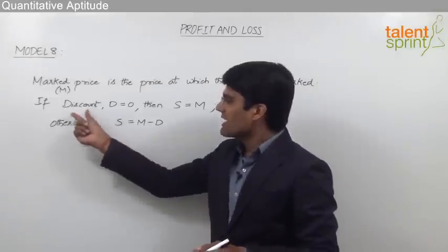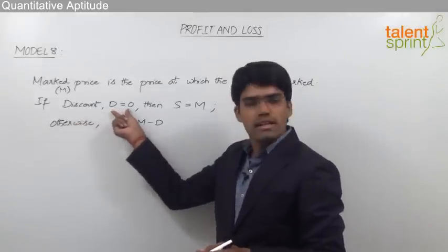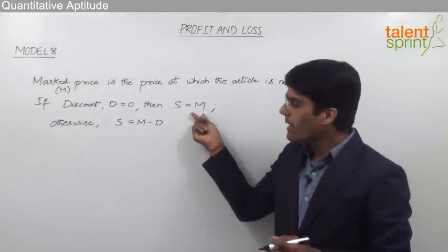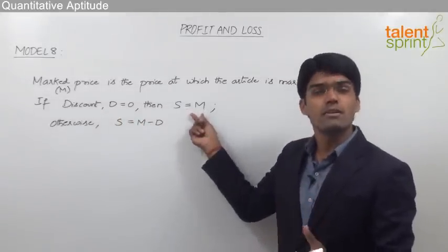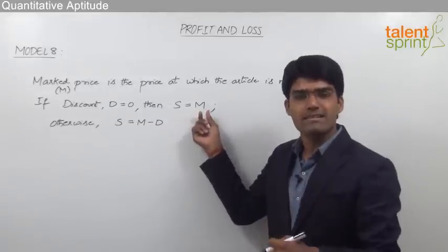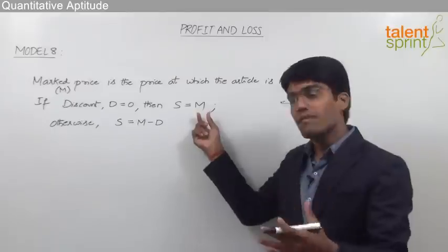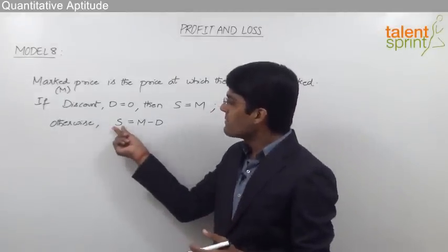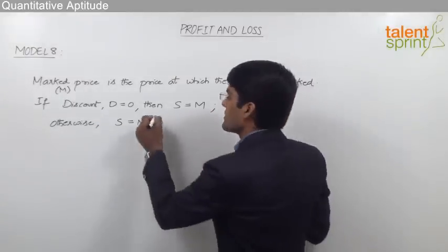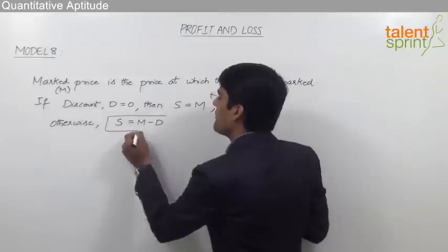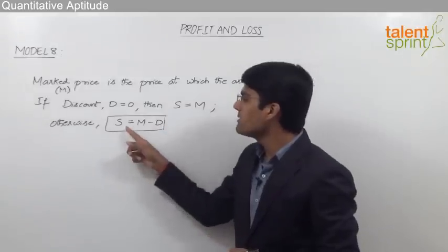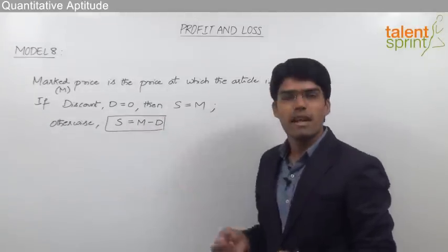If there is no discount — that is, if discount d equals 0 — then the selling price will be equal to the marked price. But whenever a discount is given, the selling price should be taken as marked price minus the discount value. So if the discount is 0, selling price will be M minus 0, which is nothing but M.